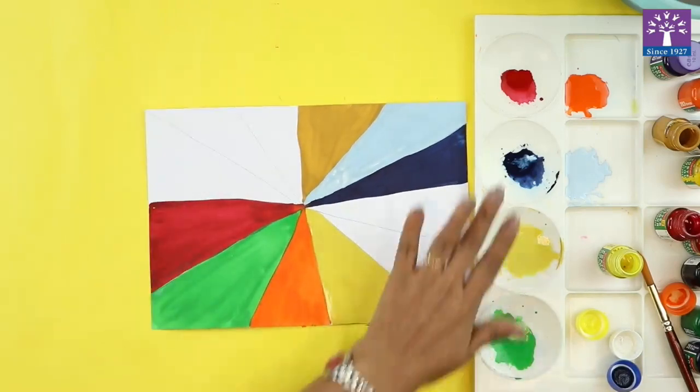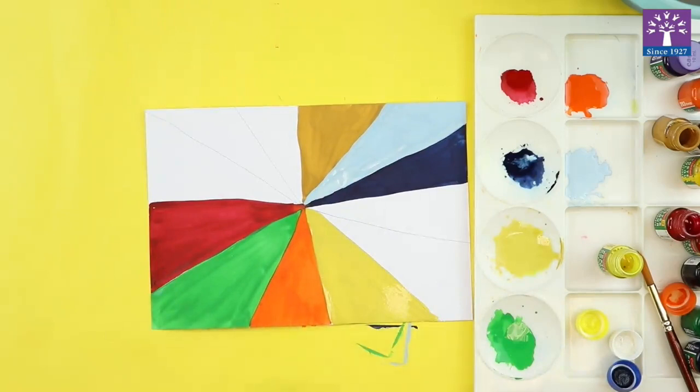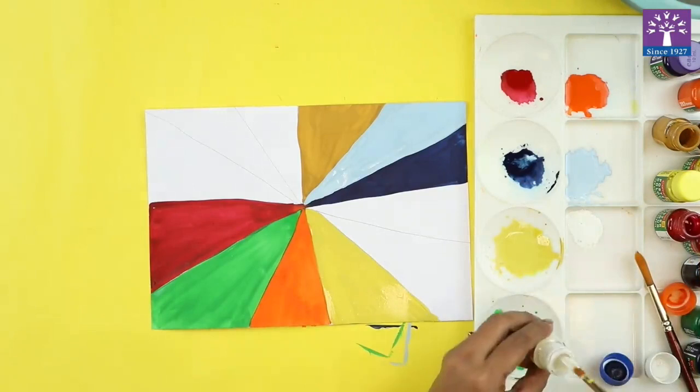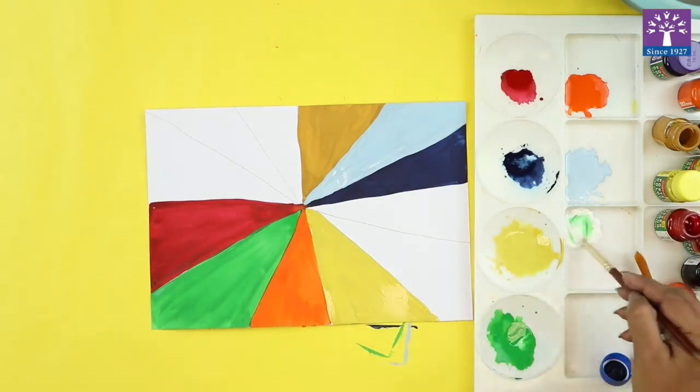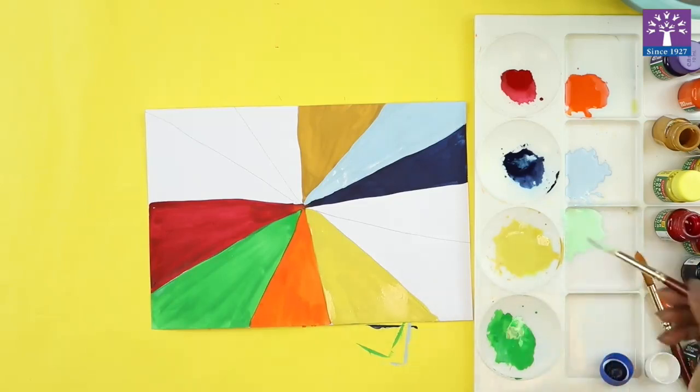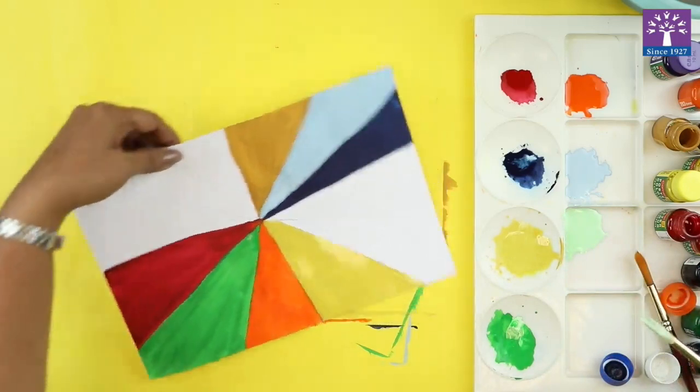Now we will keep on using these colors only. We will not add any more colors, we will just create shades and tints out of these colors that we already have in our palette. So again I'm taking some white, we have this green color, I'll pick up little bit green and mix it with the white. And we have a tint of this green color.